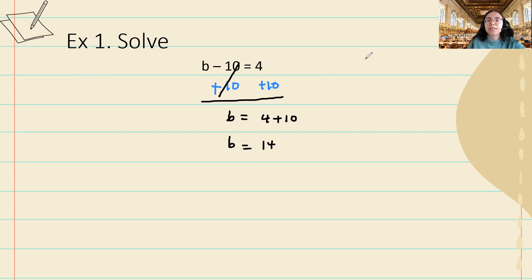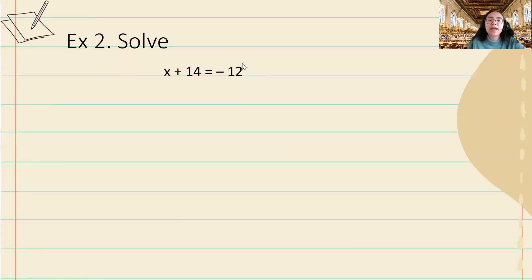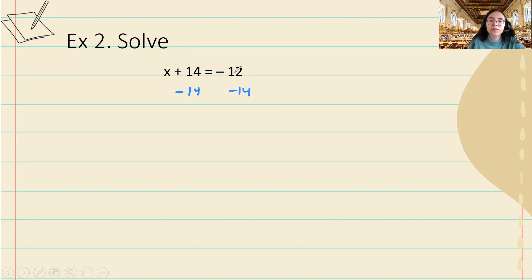Let's continue to the next example. Here we have x plus 14 is equal to negative 12, and we want to solve for x. We're adding 14, so instead we're going to subtract 14 from both sides. Positive 14 plus negative 14 is going to give me zero, so I can cancel.